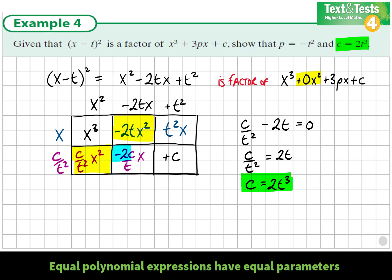The x coefficients must be the same. Inside the box we have t²x and -2c/t x, which must equal the 3px in the given equation. Comparing coefficients, t² - 2c/t = 3p.